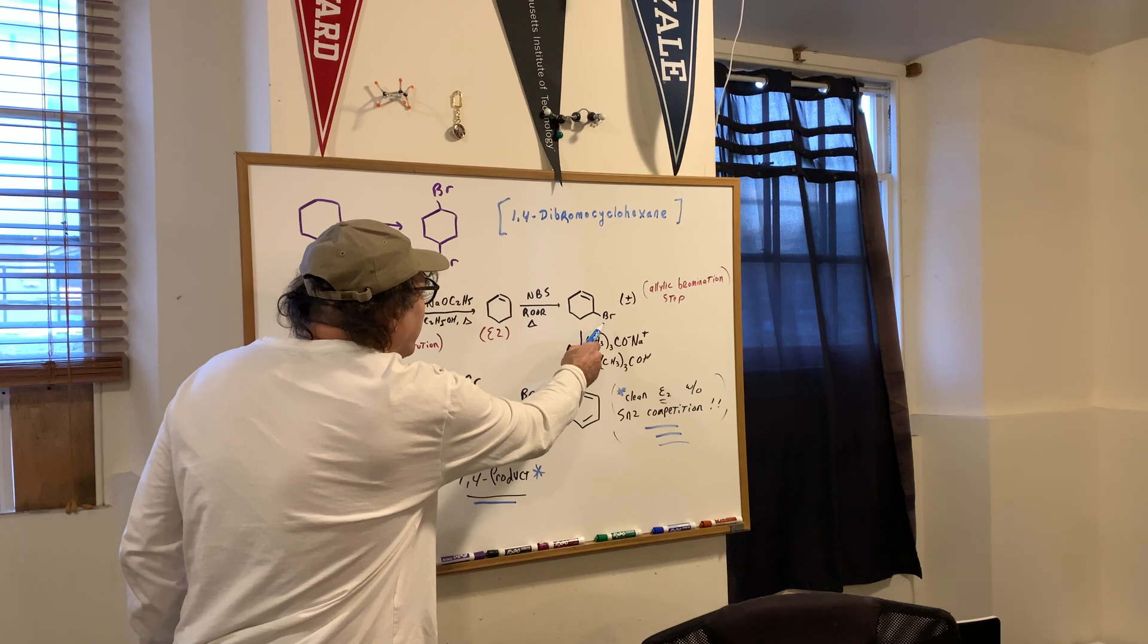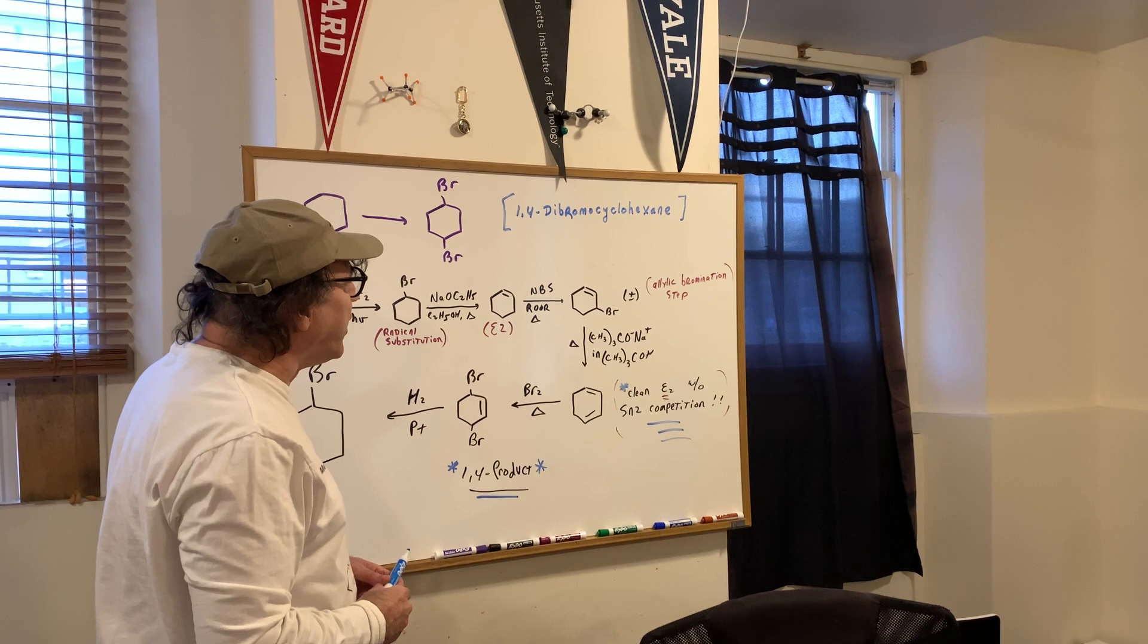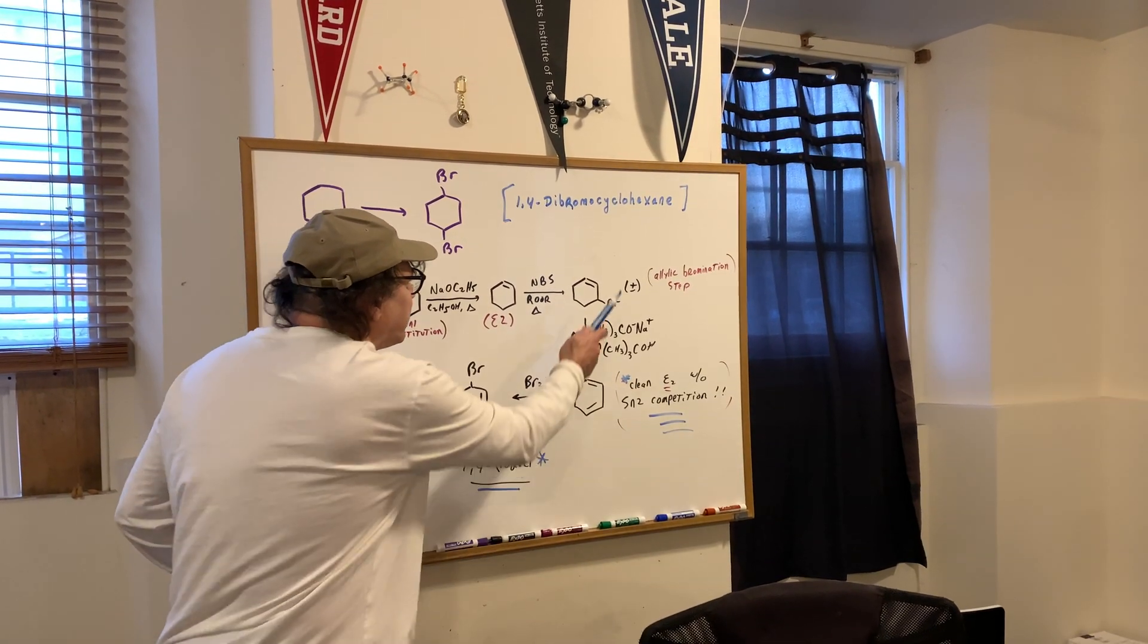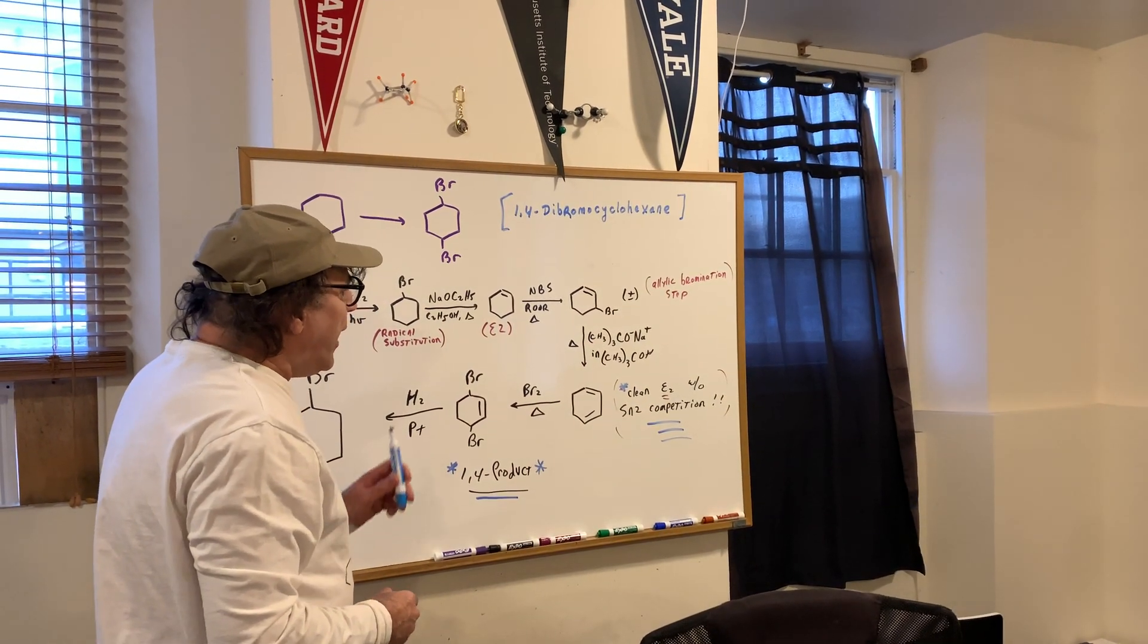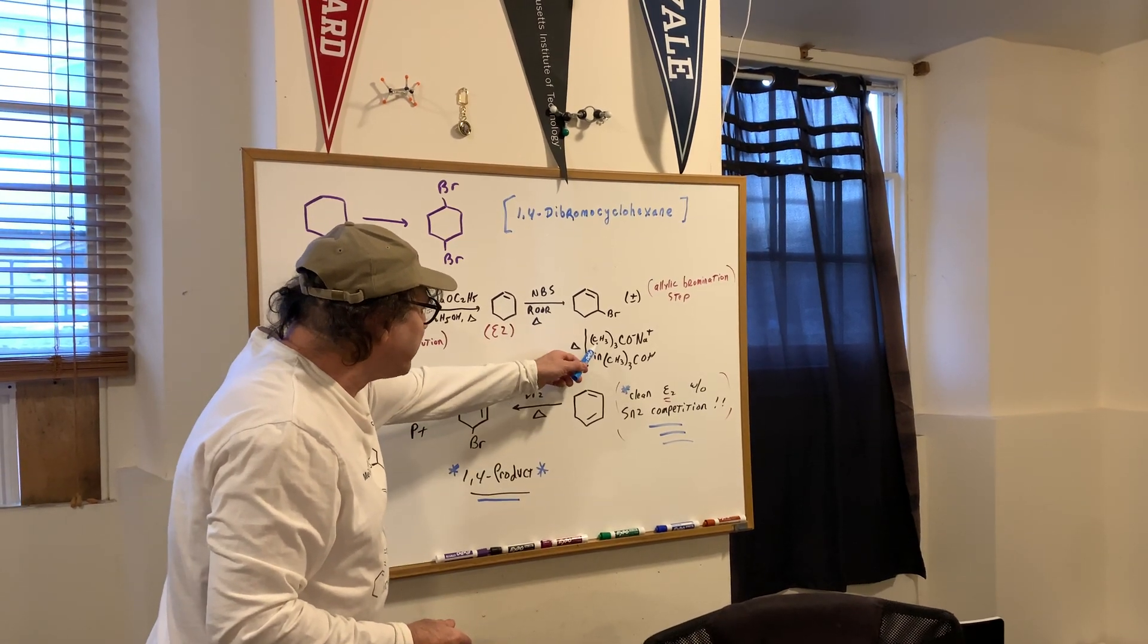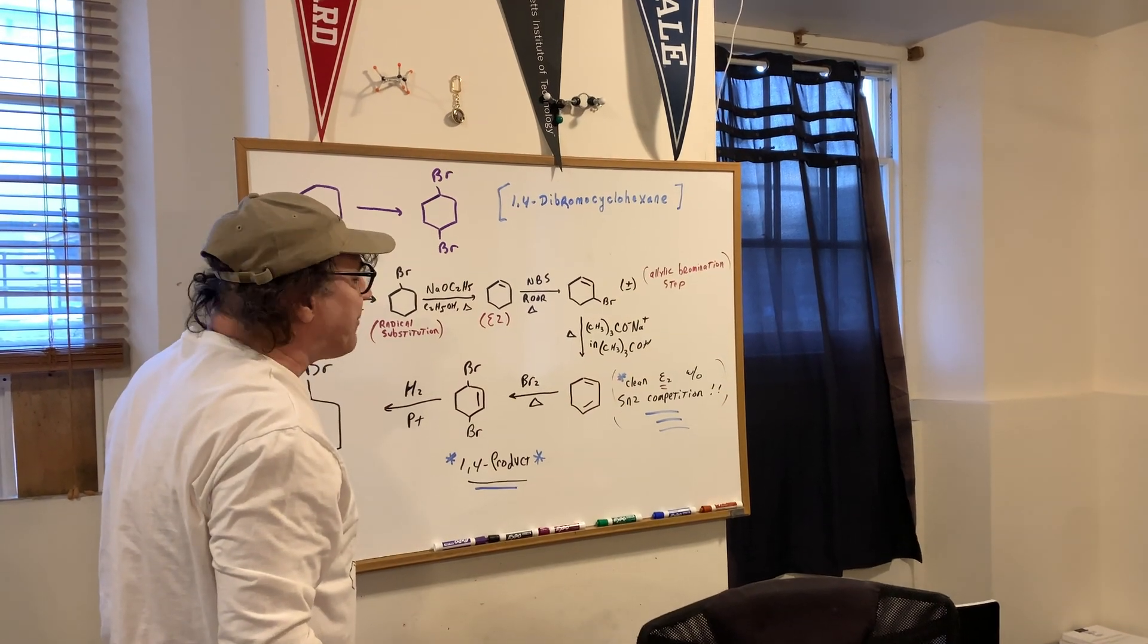What I did now is I'm going to heat this up with a very strong hindered base, such as sodium t-butoxide. And what that's going to do, it's going to take off the bromine and the H and do a very clean E2. Instead of using sodium methoxide or sodium ethoxide, I'm going to take a really strong, big, bulky base. That will prevent me from doing any SN2 competition.